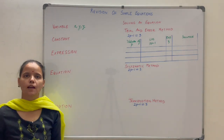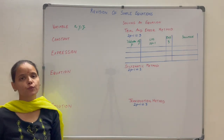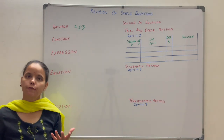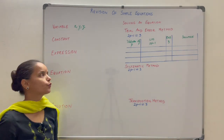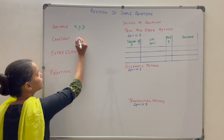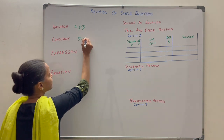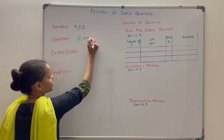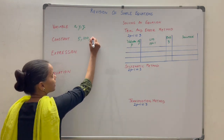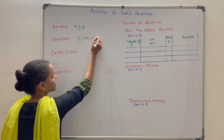Constant — something whose value is fixed. For example, 500, and you can write down any number here.